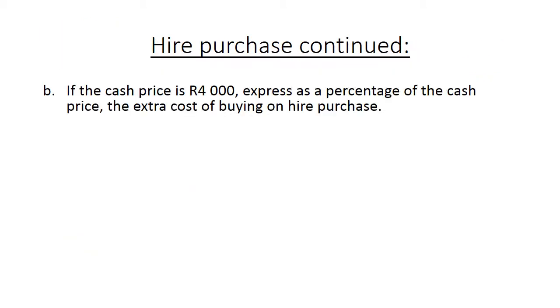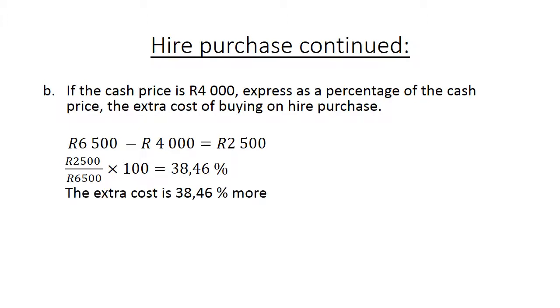Hire purchase continued. If the cash price is R4,000, express as a percentage of the cash price the extra cost of buying on hire purchase. R6,500 minus R4,000 gives you R2,500. So now you take the R2,500, you divide it by the R6,500, times 100, and that equals 38.46%. Which means the extra cost is 38.46% that you pay more on this cash price if you hire purchase something.